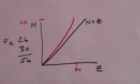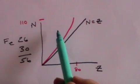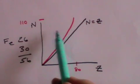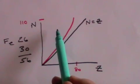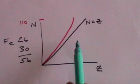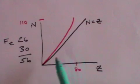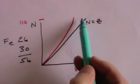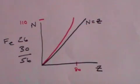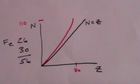A nucleus is likely to be unstable if it has either too many neutrons — in other words, it's in this part of the chart — or if it has too few neutrons, which means it's in this part of the chart, or if it has too many nucleons, meaning it's right up here, or if it has too much energy.